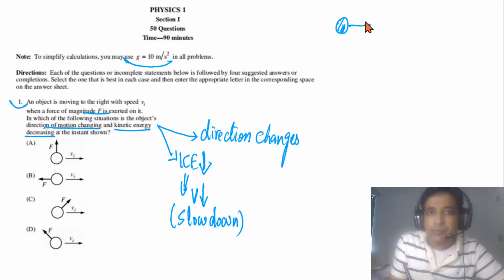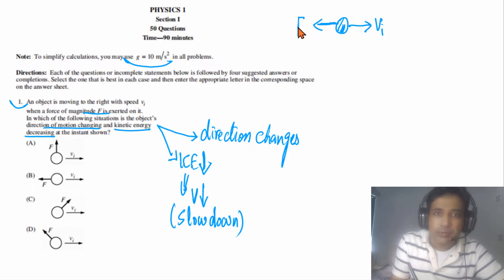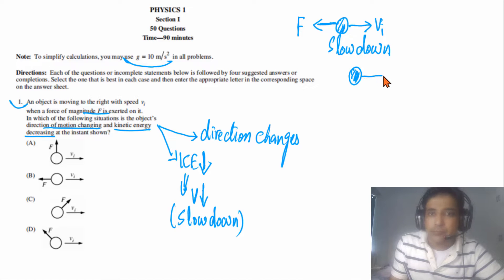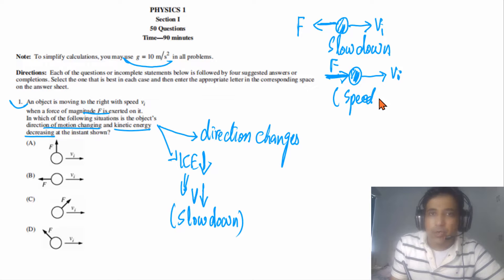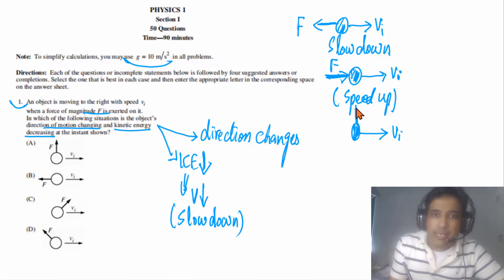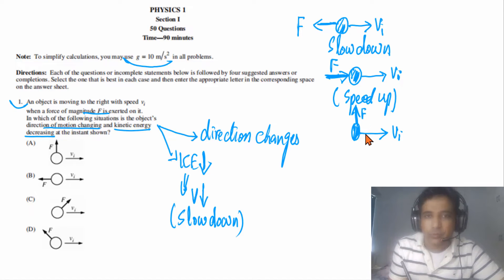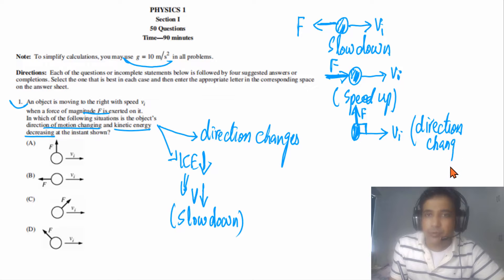If an object is moving to the right and we apply a force in the opposite direction, the object will slow down. If the force is in the same direction as motion, the object speeds up and kinetic energy increases. A special case: if force is applied at exactly 90 degrees to motion, only the direction changes — speed does not change.